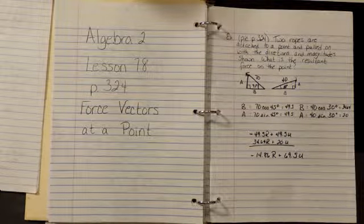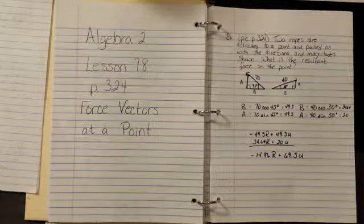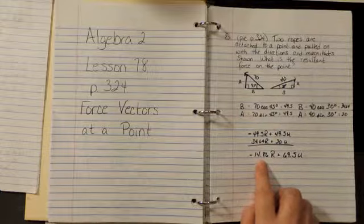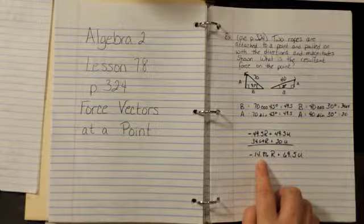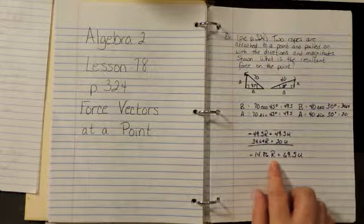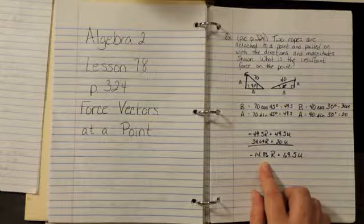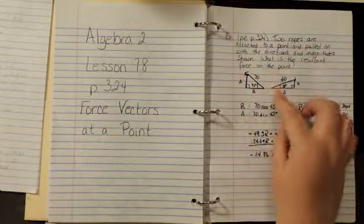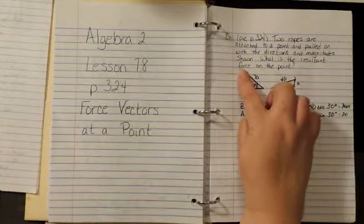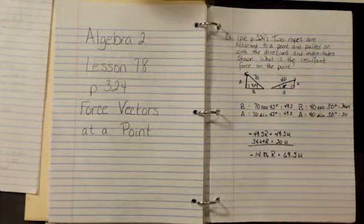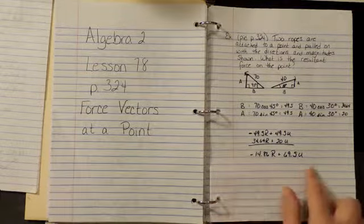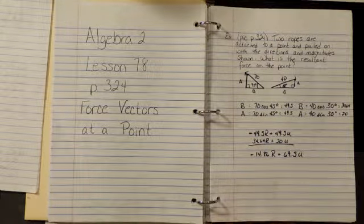So the force on the point is going to pull it towards the left and up. And it's going to be stronger up than it is to the left, which makes sense because both of these are pulling up. And it's pulling a little stronger to the left than it is to the right. So this is a reasonable answer.